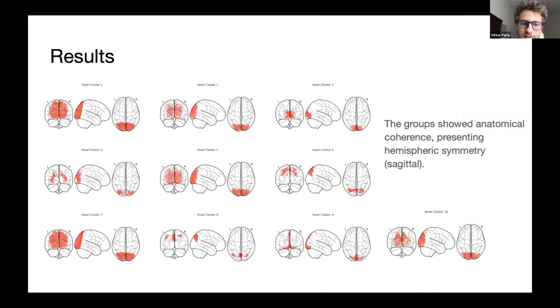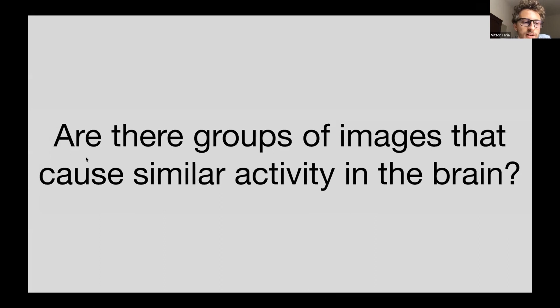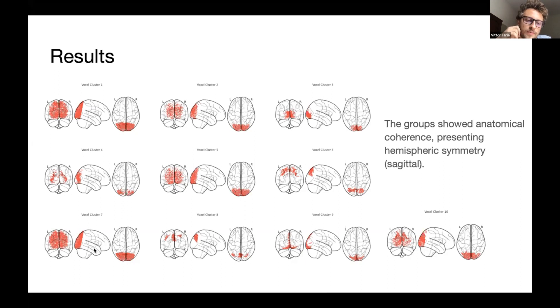We then plotted these clusters in an anatomical mask and we see in all the clusters, a sagittal symmetry. This observation is according to the experiment design that showed the same image to both eyes of the subjects. And in most cases, the clusters are restricted to certain areas, certain regions of the brain. For example, this one that is restricted mostly on V1. These other ones that may be related to the eventual stream of information and so on. There are many others that don't have this anatomical coherence. And we hypothesize that these ones are related to distributed processing in the visual cortex.